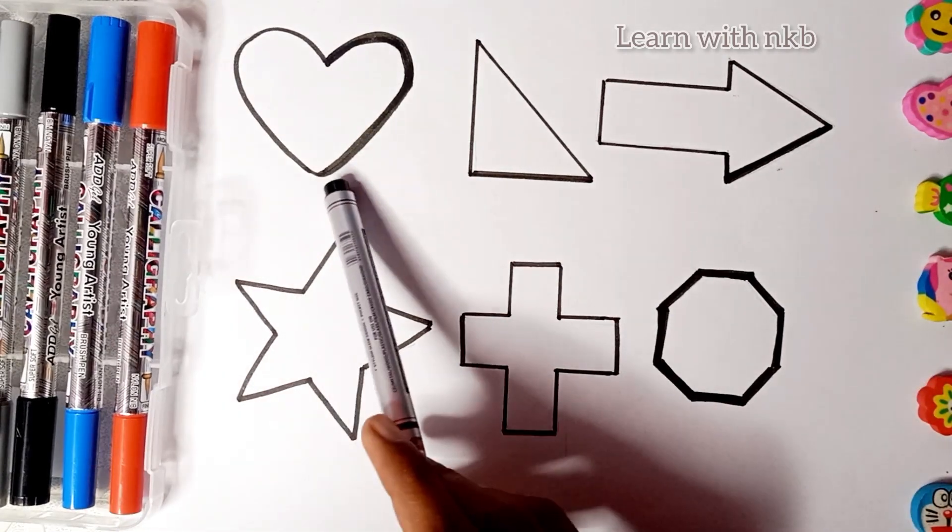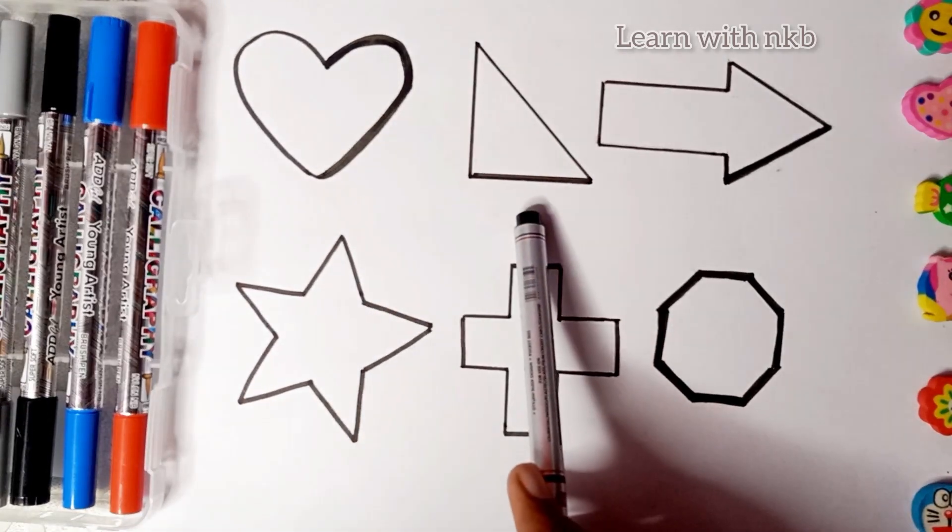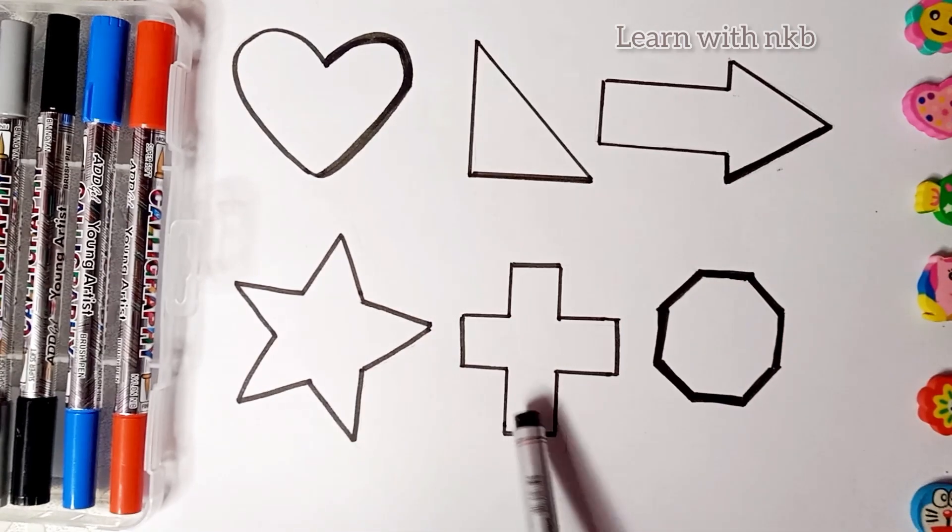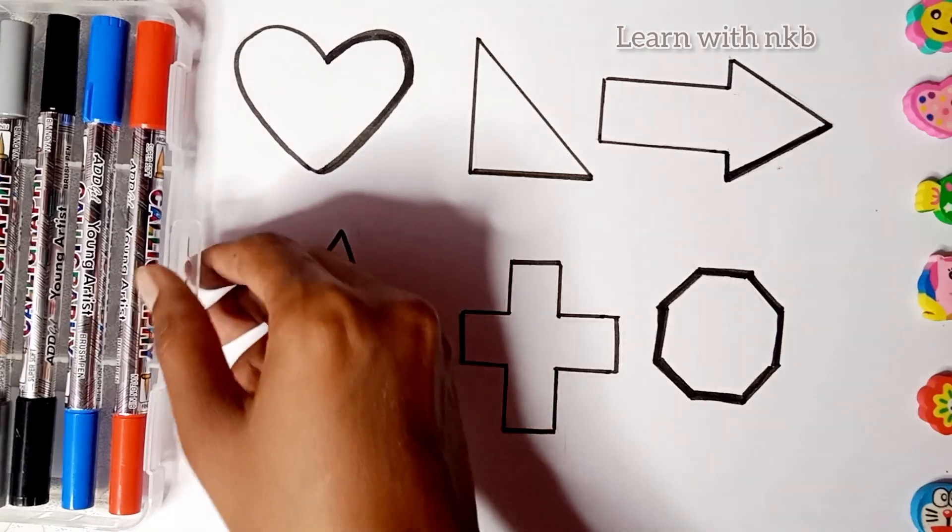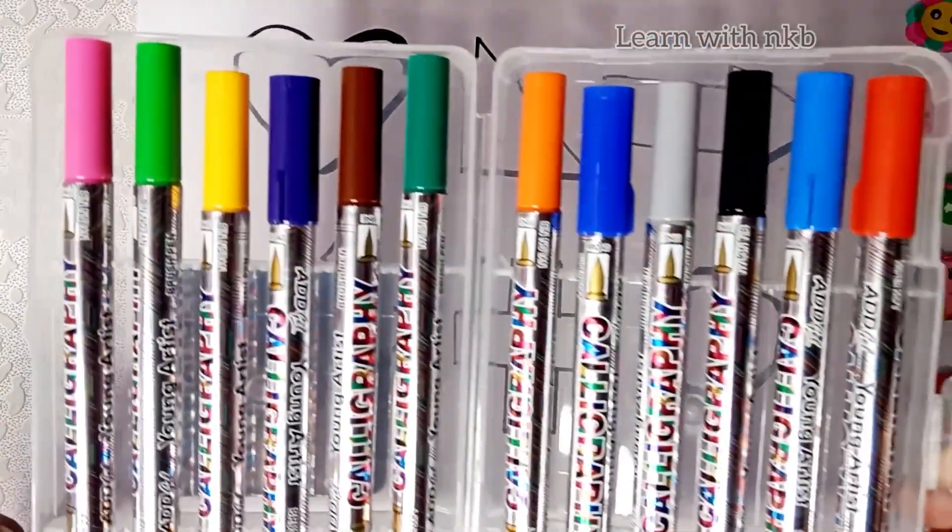This is heart, right angle, arrow, star, plus, octagonal. Now kids, learn some color names.